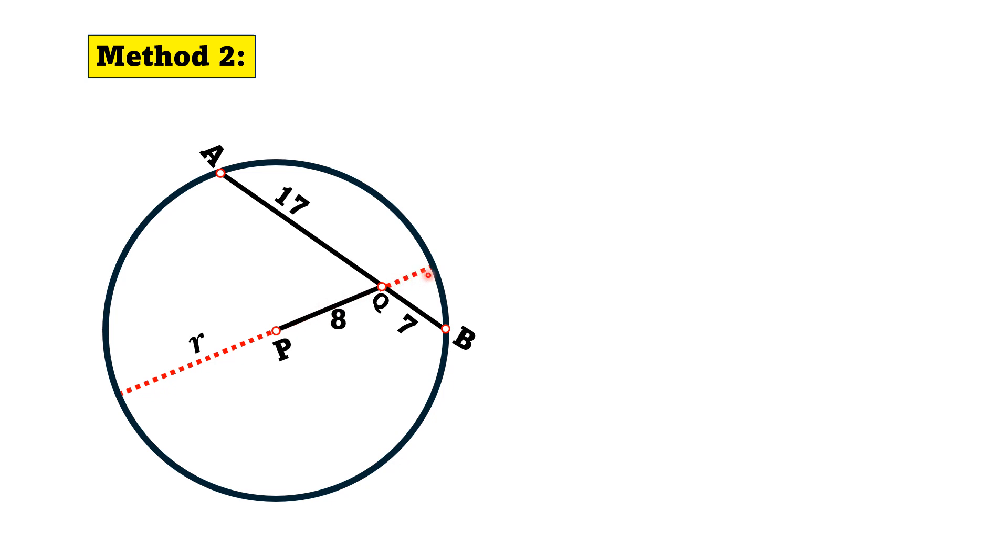This whole length is the radius of the circle. This whole length is 8, so this length must be R minus 8, and similarly this whole length will be R plus 8.